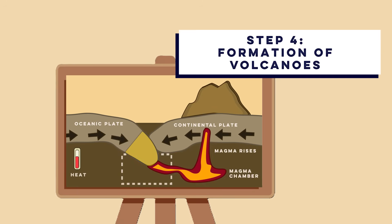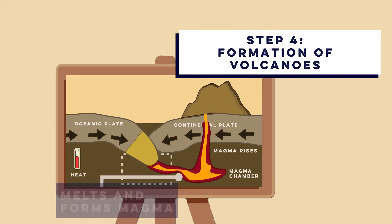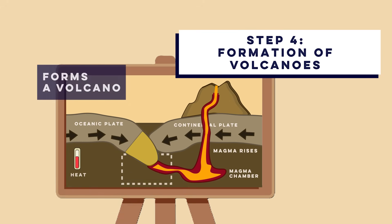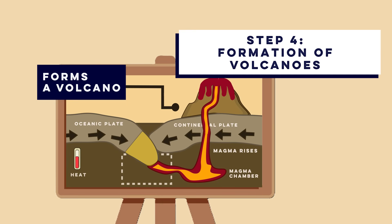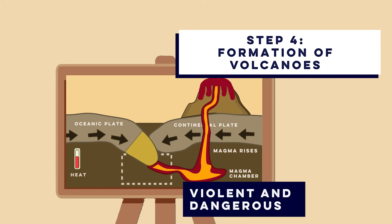As the subducting plate melts, it forms magma, which is less dense than the surrounding rock. This magma rises through the continental crust to the surface, forming a volcano. This is how we get explosive volcanic eruptions. This magma is thick and full of gas from the melting plate, making eruptions both violent and dangerous.